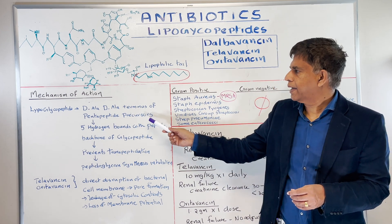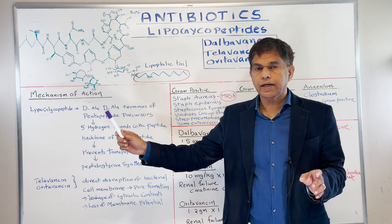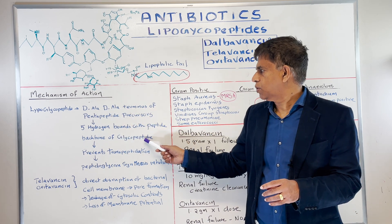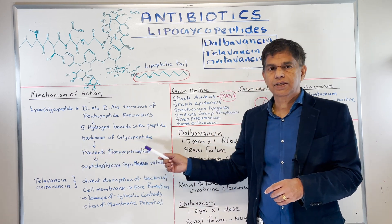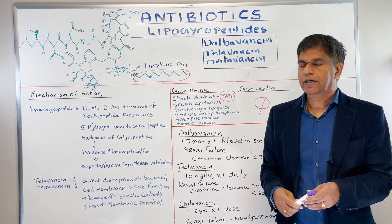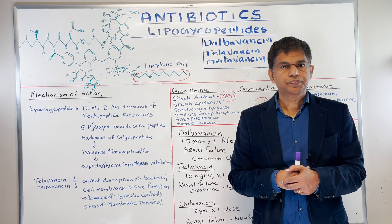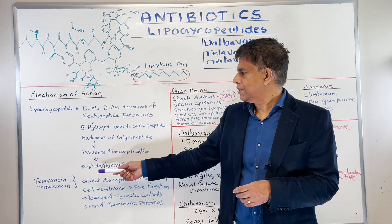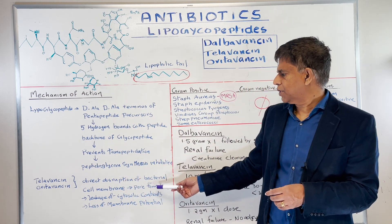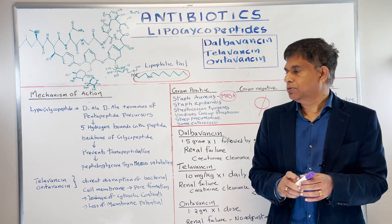The next thing we have to look at is the mechanism of action. Just like vancomycin, this drug attaches to the D-alanine terminus of the pentapeptide, forming five hydrogen bonds with the peptide backbone. This prevents transpeptidation — always remember that word for examination purposes — and eventually affects peptidoglycan synthesis, which is very important for the bacterial cell wall. Additionally, telavancin and oritavancin cause direct disruption of the bacterial cell membrane, causing pore formation so that cytosolic contents leak out.